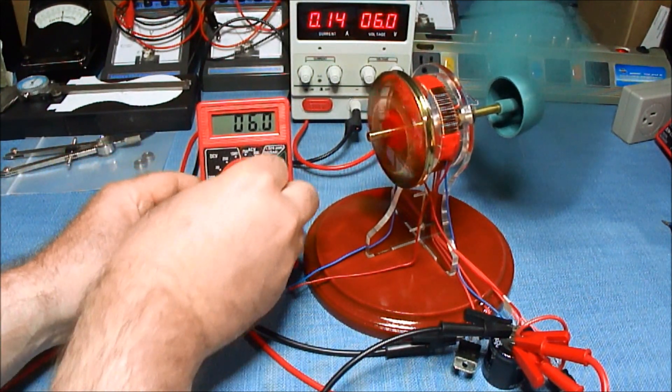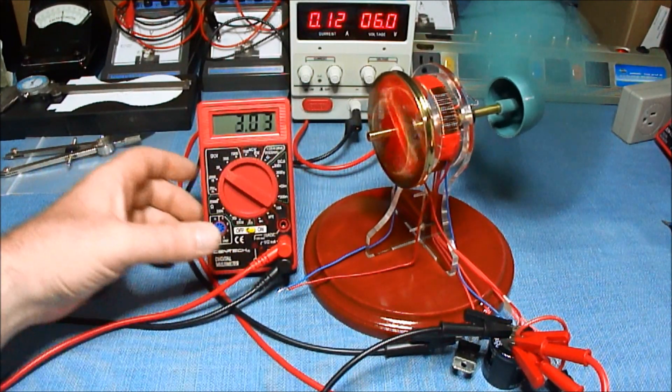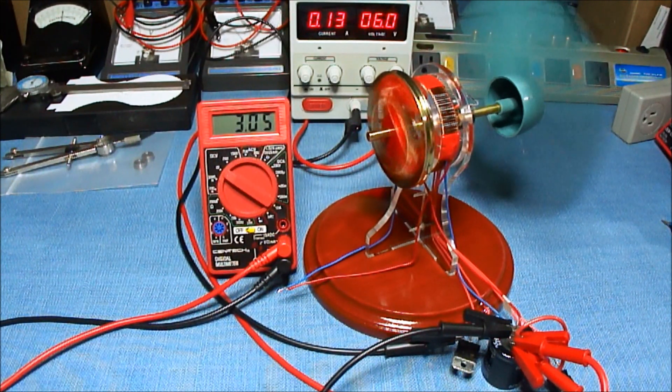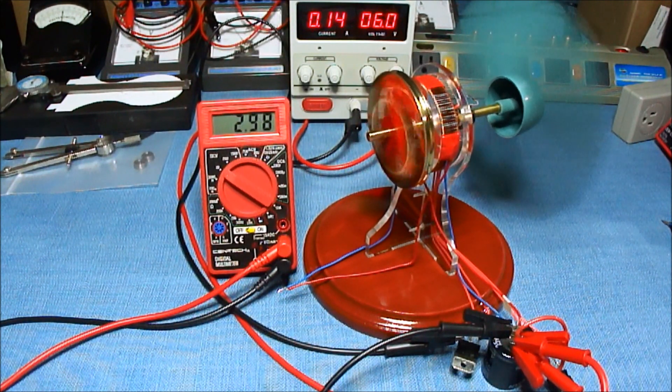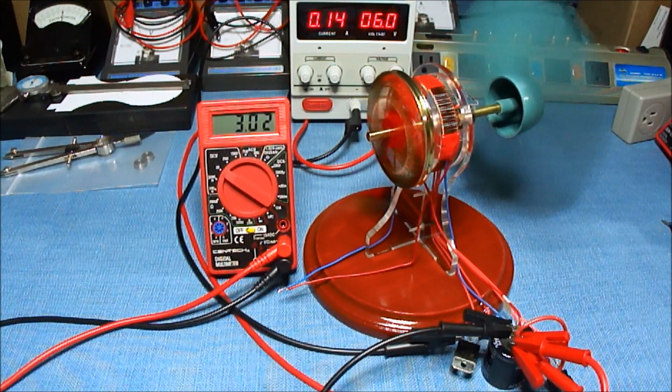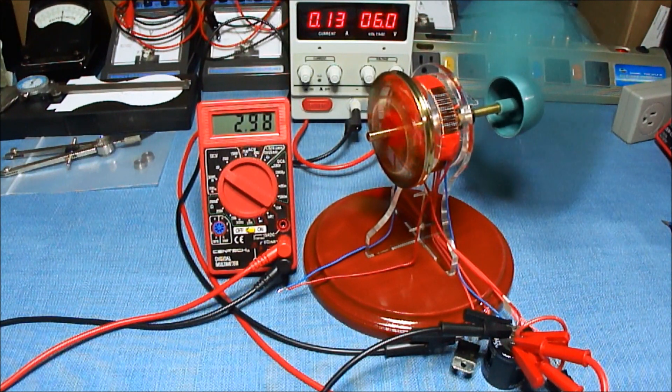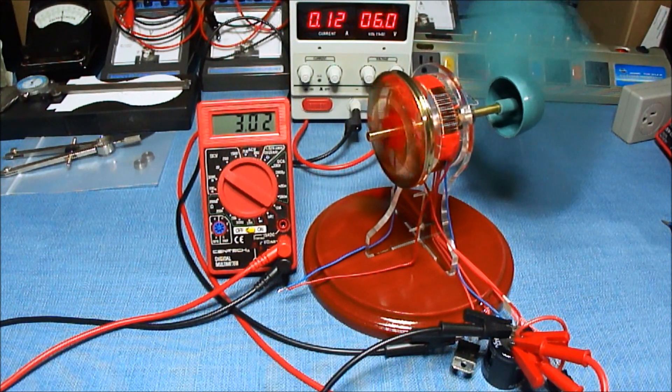If I switch this to DC, we get half the voltage, which makes sense because of the AC being the two pulses.